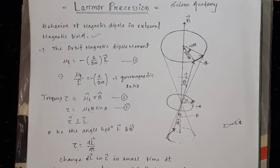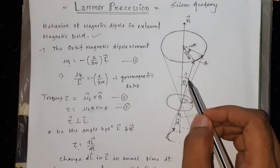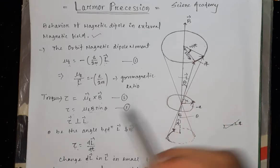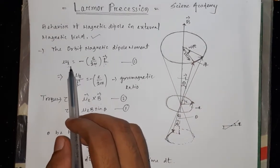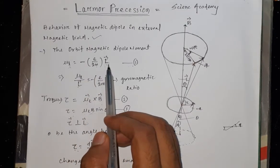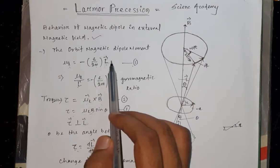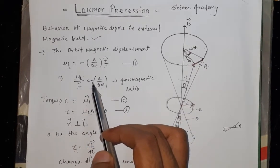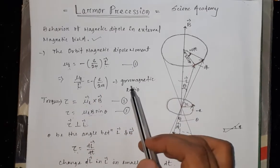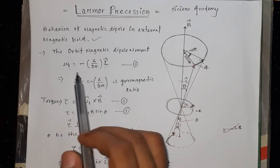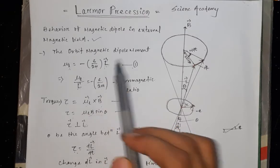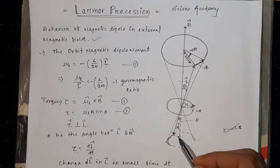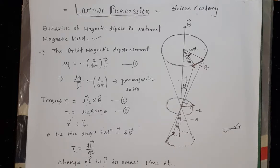The electronic orbit is in an external magnetic field B. The orbital angular momentum of the electron is represented by vector L, and theta is the angle between B and L. The orbital magnetic dipole moment is given by mu_L equals minus e by 2m times the vector L. The ratio mu_L by L equals minus e by 2m is called the gyromagnetic ratio. An important point is that mu_L is always opposite in direction to L.